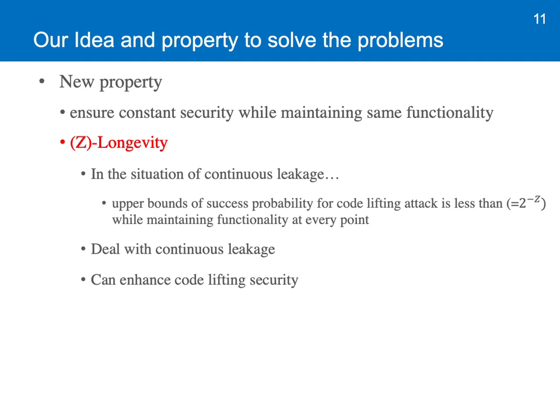The formal definition is in our paper. To talk about z-longevity in a more casual way, a cipher with z-longevity ensures that even in the situation of continuous leakage, the upper bound of success probability for code lifting attack is less than 2 to the power of minus z, while keeping the same functionality at every single point. This property deals with continuous leakage, and as a result, z-longevity can enhance code lifting security.